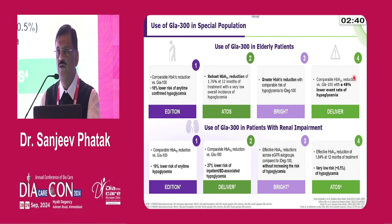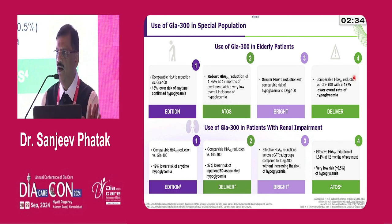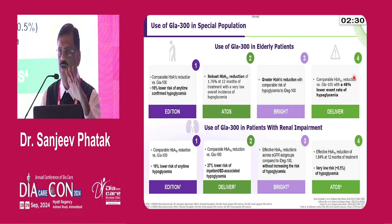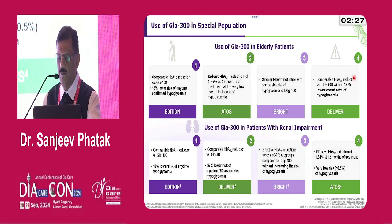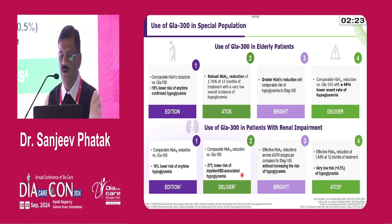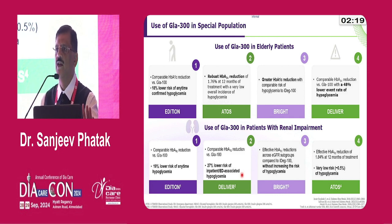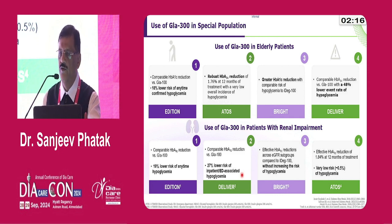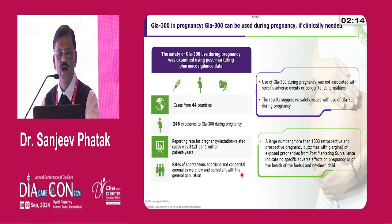Regarding special populations — can it be used in elderly patients? Yes. The EDITION, ATTO, BRIGHT, and DELIVER studies have clearly shown that in elderly patients, glargine U300 is one of the safer insulins because of its lower risk of hypoglycemia. In patients with renal impairment, you also need an insulin with lower hypoglycemia risk, and these same studies have shown it may be safer compared to glargine U100 in patients with renal impairment.